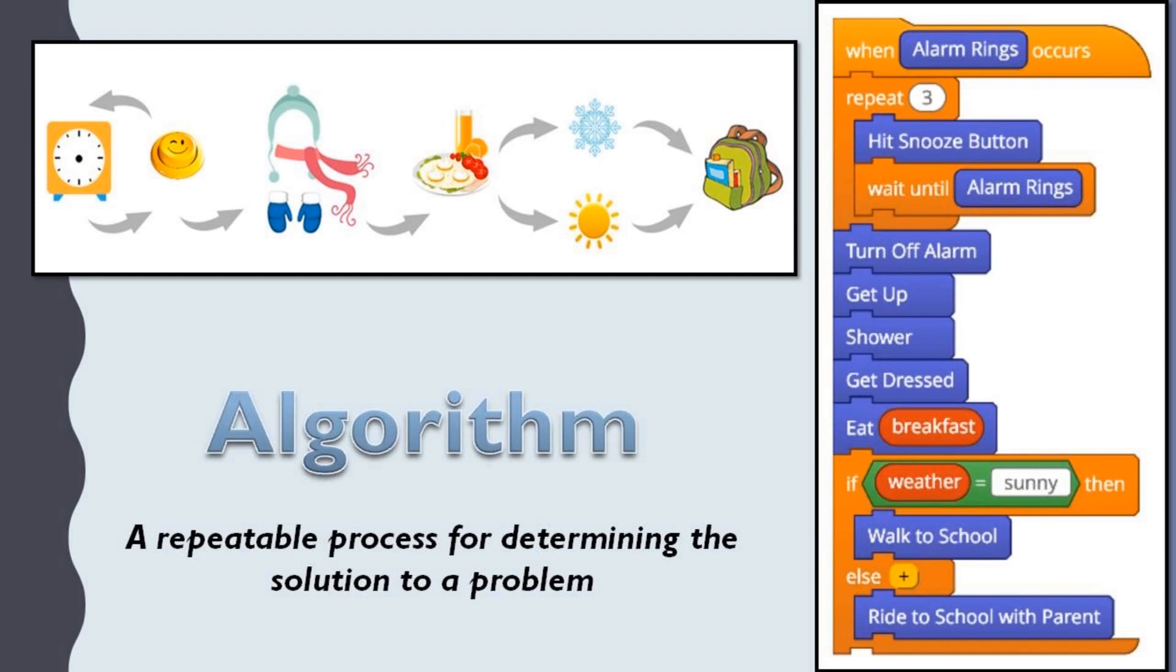And here is what your morning might look like written out as an algorithm. And I know exactly what is happening in your mornings. Let's check whether I am correct. When alarm rings occurs, you repeat this three times. You hit the snooze button and wait until alarm rings again.